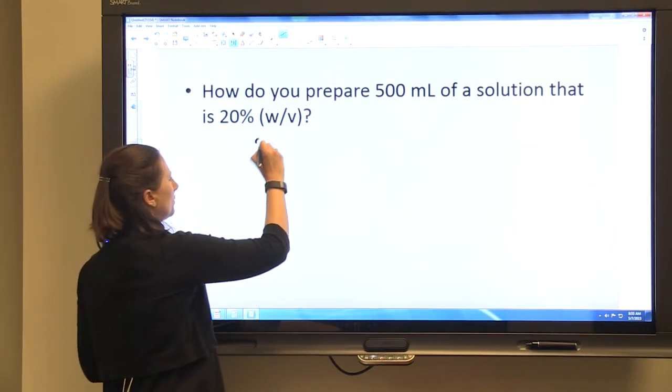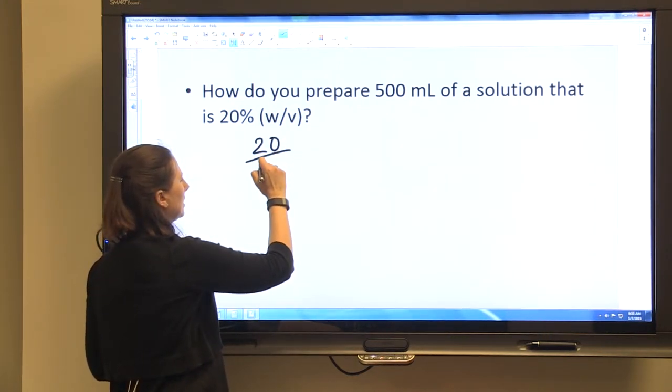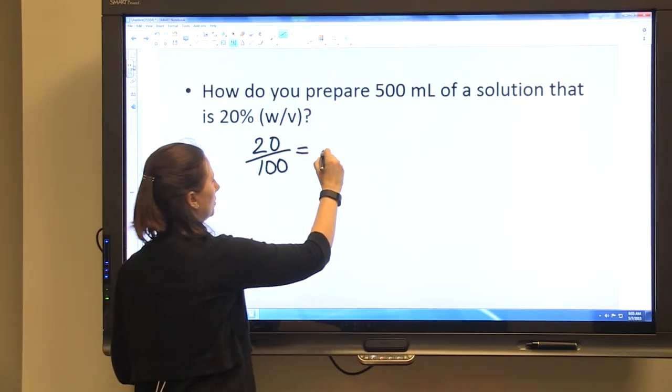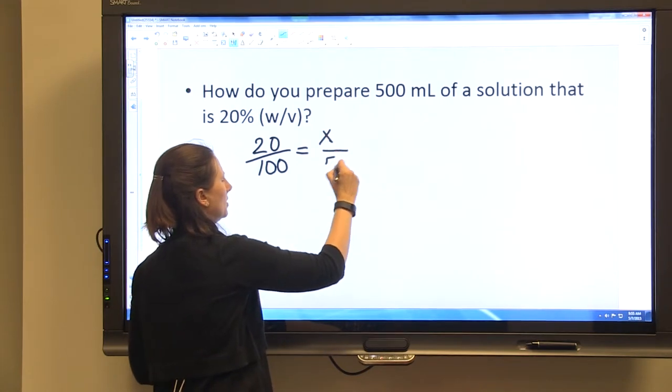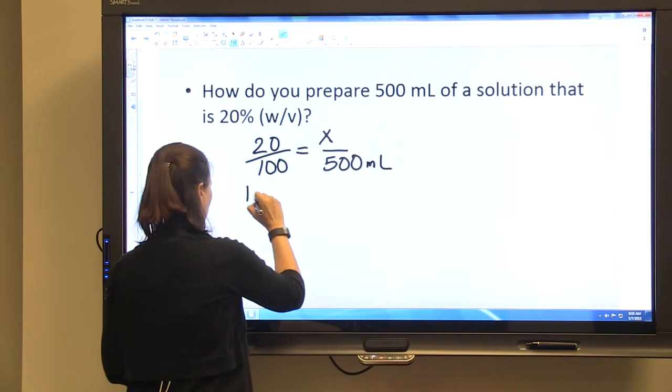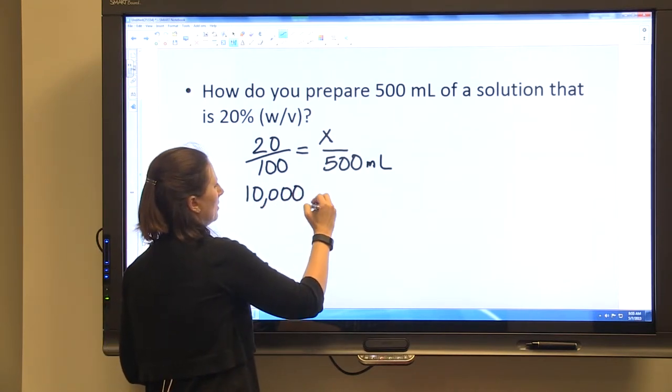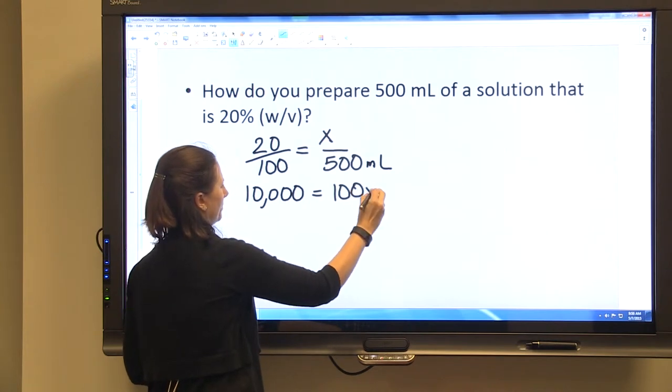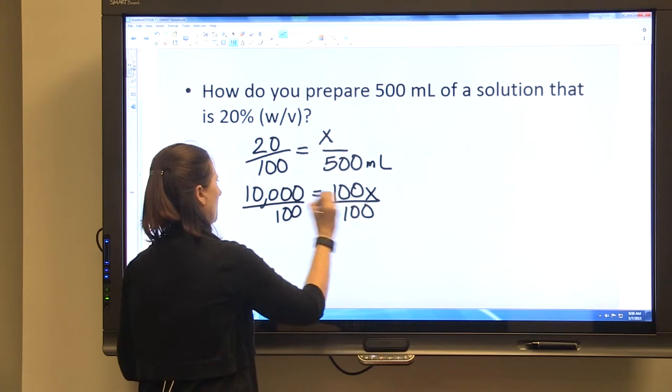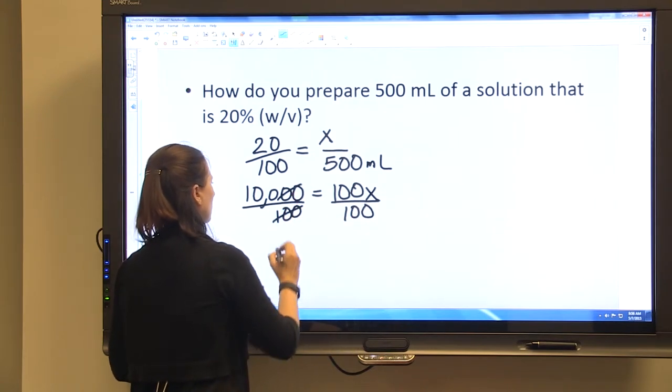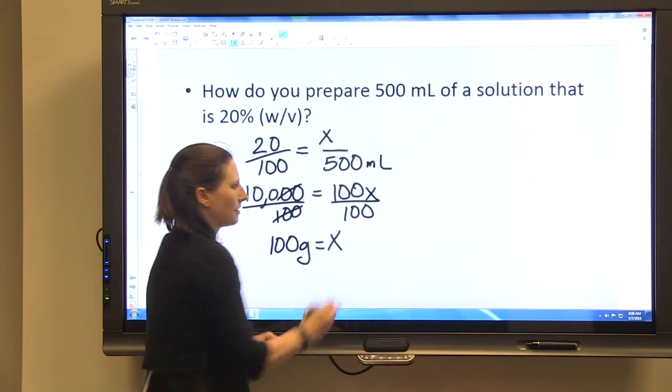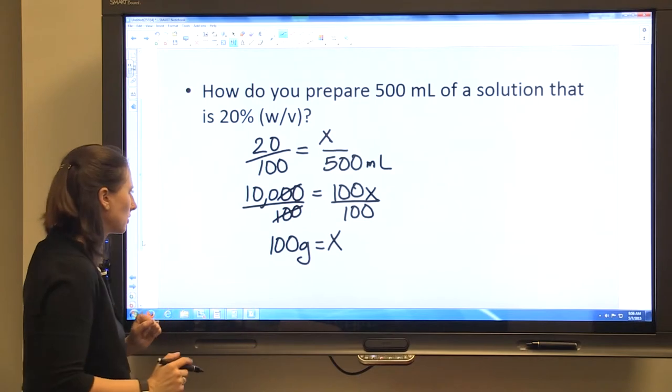We can do it the same way we did our percentages where you have 20 out of 100 is equal to how much of 500 mLs. So then you've got 10,000 equals 100x and you divide both sides by 100 and you'll have 100 grams is the amount that you need to add to your solution.